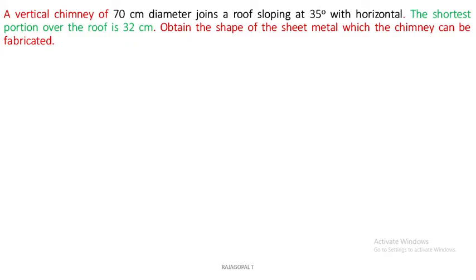Hi friends, welcome back. In this video we will discuss an interesting practical problem on the development of lateral surface. A vertical chimney of 70 centimeter diameter joins a roof sloping at 35 degrees with horizontal. The shortest portion over the roof is 32 centimeter. Obtain the shape of the sheet metal which the chimney can be fabricated. In the last session we discussed hexagonal prism on the development of lateral surface — you can check the description box for the link.